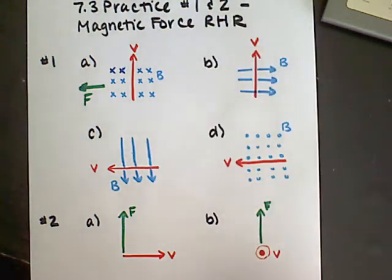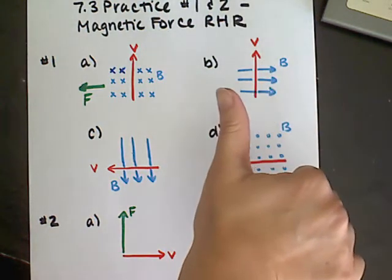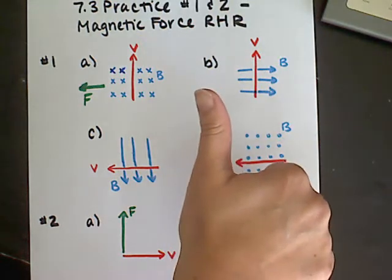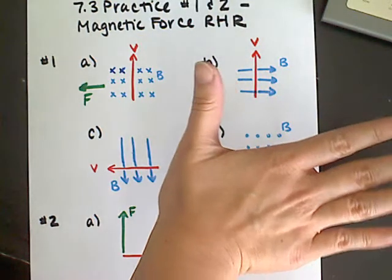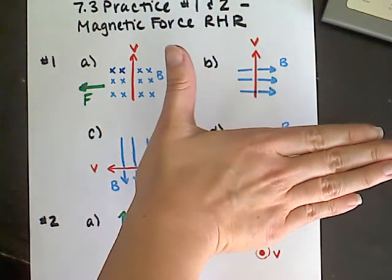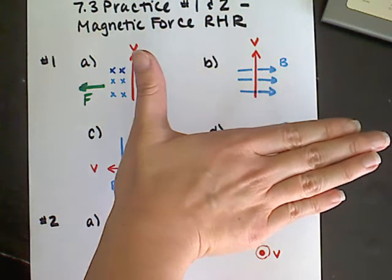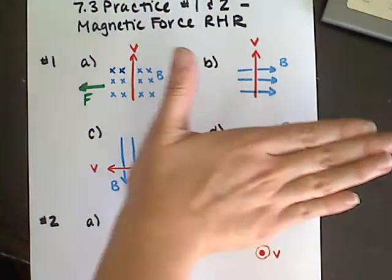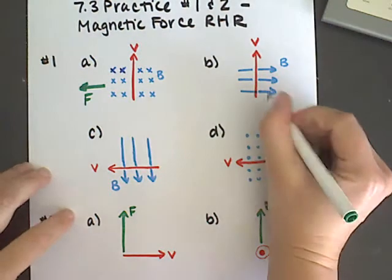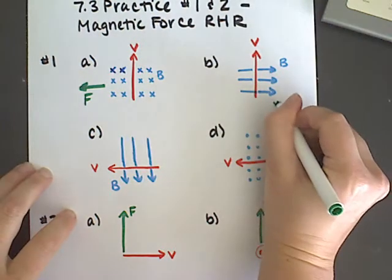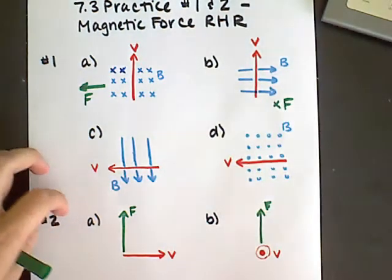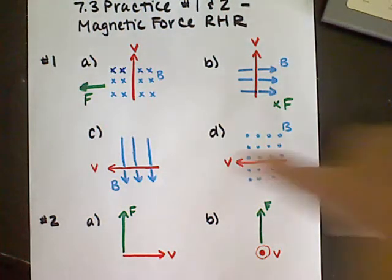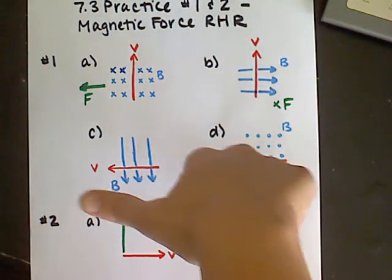For part b, velocity is still upward, so my thumb goes up. The magnetic field lines are pointing to the right, so I have my fingers going to the right. I then see that my palm is facing away from me, going down into the page, which means the force is directed into the page, away from me.